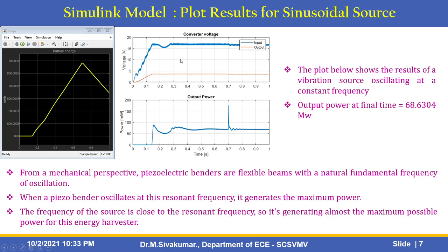The first option plots results for a sinusoidal source. The converter voltage and output power scope shows the result of a vibration source oscillating at a constant frequency, giving an output power at final time of 68.6304 milliwatts. From a mechanical perspective, piezoelectric benders are flexible beams with a natural fundamental frequency of oscillation. When a piezo-bender oscillates at this resonant frequency it generates maximum power. Since the source frequency is close to the resonant frequency, it generates almost the maximum possible power.